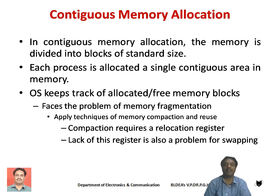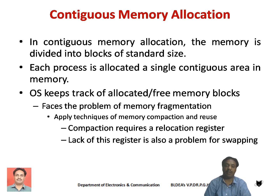To maintain this, the operating system has to keep track of allocated as well as free memory blocks. It continuously monitors both because when a new process needs memory, the operating system has to check which memory blocks are already allocated and which are free, then decide which block to allocate depending on the size of the program and the blocks available.